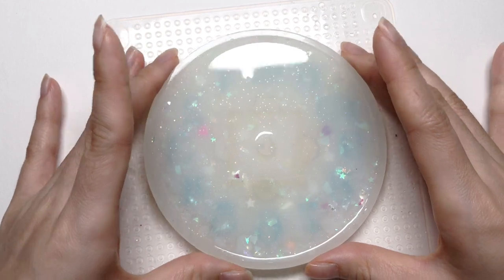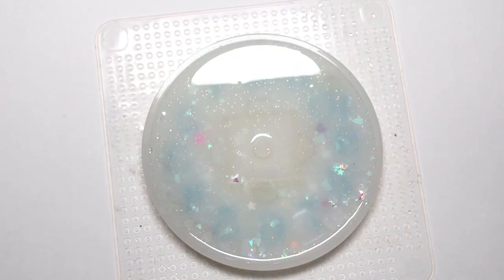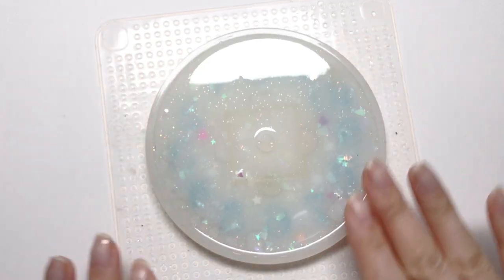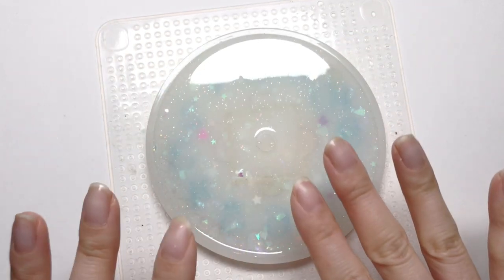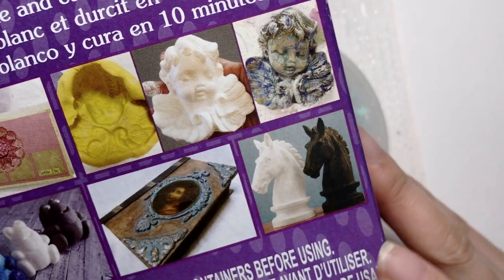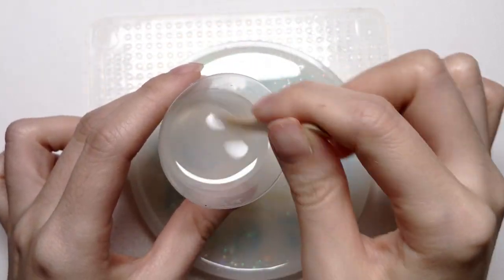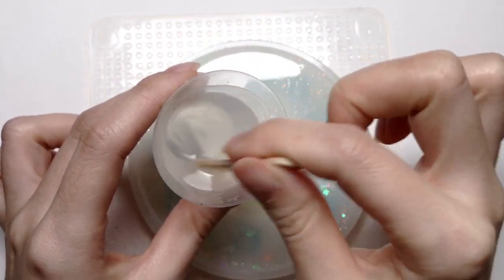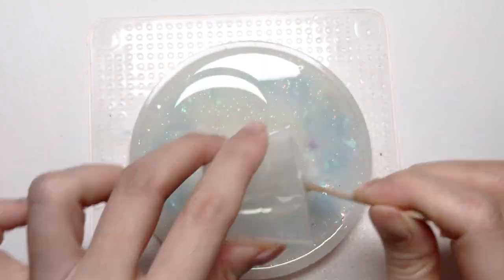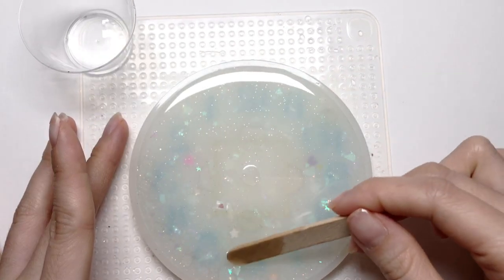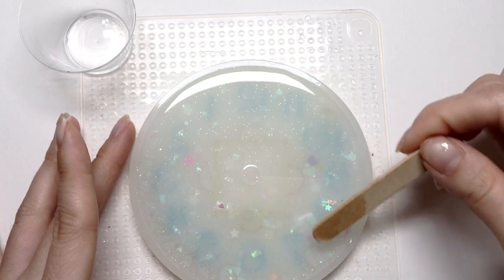The second layer has solidified just enough. But as you can see, it's transparent. And I want it to be a solid white. Which is why I'm going to be using white casting resin. I'm going to pour 10ml for the third pour. White casting resin cures within 10 minutes. So, you have to act really fast. I'm always in a state of panic whenever I use the white casting resin.